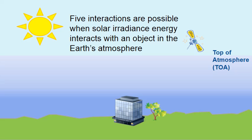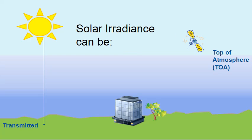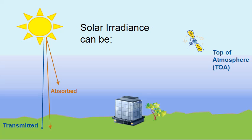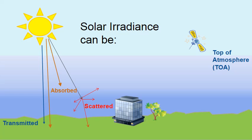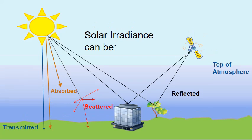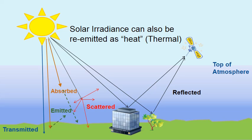Five interactions are possible when solar irradiance energy interacts with an object in the Earth's atmosphere. It can be transmitted through an object, absorbed by an atom or molecule in the atmosphere or on the ground, scattered by those same molecules and atoms, or reflected — an object can absorb part of it and reflect part of the wavelength. Solar irradiance can also be re-emitted, usually at a lower wavelength, as heat or thermal energy.